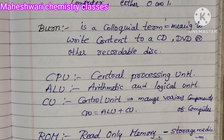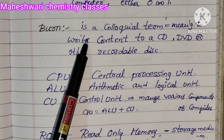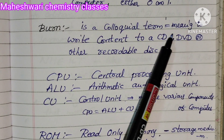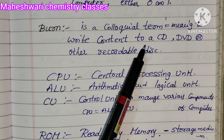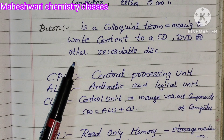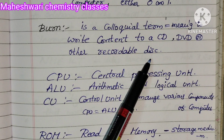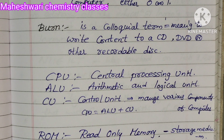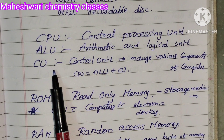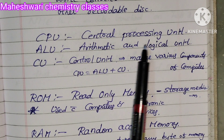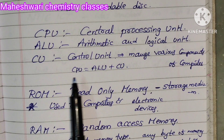Burn is a colloquial term meaning to write or record data to a CD, DVD, or other recordable disk. CPU — Central Processing Unit. ALU — Arithmetic and Logic Unit. CU — Control Unit, which manages various components.